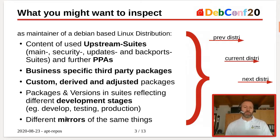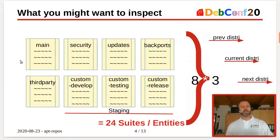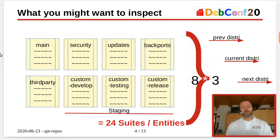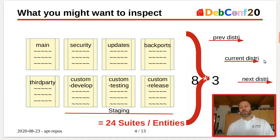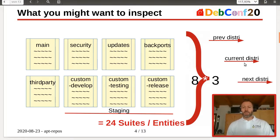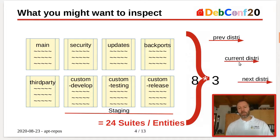If you think about the deployment of your distribution, at some points you might need mirrors of things already deployed somewhere else. To visualize this a little bit: one possible setup could have main, security updates, backports from upstream repositories, then third-party repositories, and three stages for custom development — each suite being one entity. So we have eight entities to track for just one distribution. And if our current distribution is not the only one — maybe we have a previous distribution to maintain and a next one in development — that's 24 entities in the end. How should we handle that?